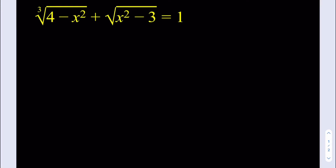Hello everyone. In this video we're going to be solving an equation that has the cube root and the square root in it. You can just pause and try the problem yourself first. We have the cube root of 4 minus x squared, plus the square root of x squared minus 3, equal to 1, and we're trying to solve for x.